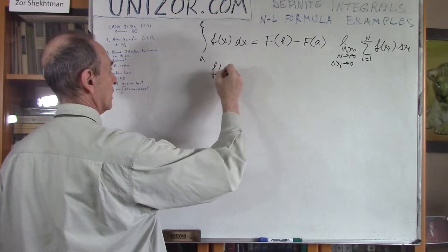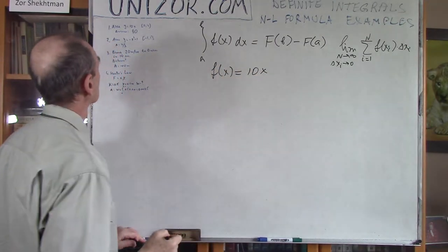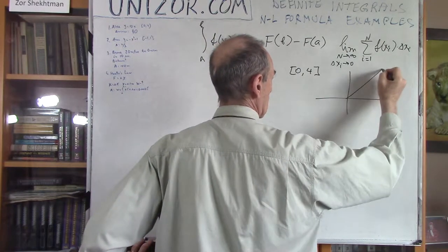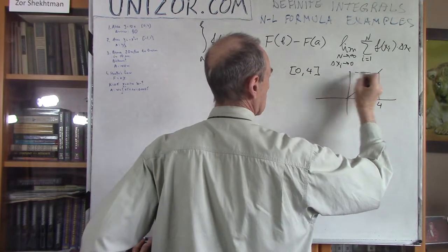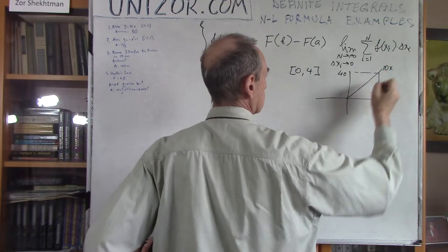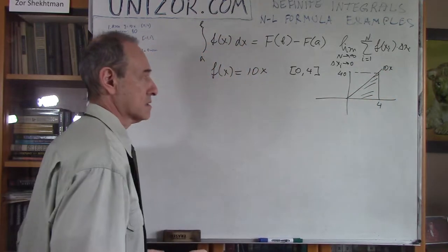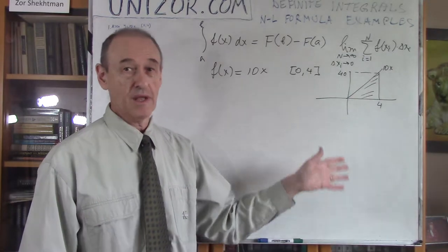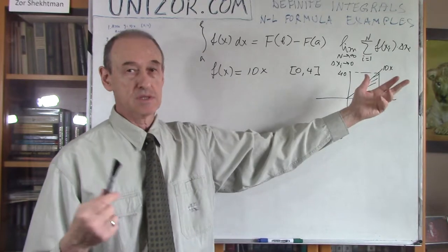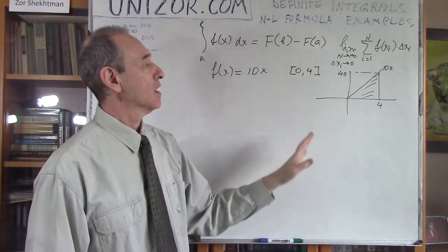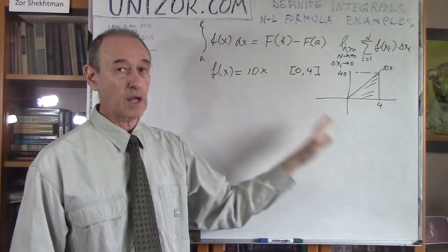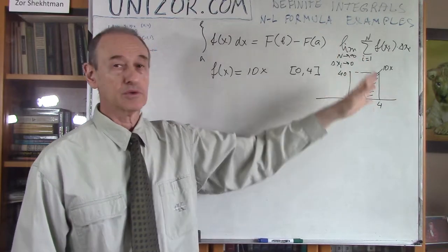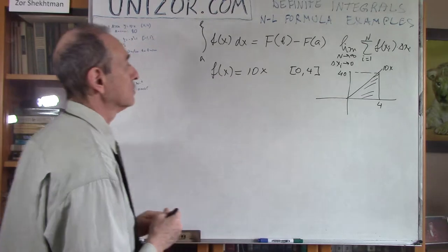Now I will do exactly the same two examples, but I will use them to demonstrate how easy it is to use the Newton-Leibniz formula to calculate, versus what I was doing before according to the definition of the definite integral. First, I have a function f(x) = 10x, and the segment is [0, 4]. The graph goes from 0 to 40, and we need the area under this graph. Obviously, this is a triangle. We can calculate the area of a triangle: it's 4 times 40, which is 160, divided by 2 — it's 80. But I would like to use the integral to calculate this area.